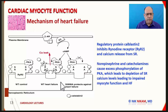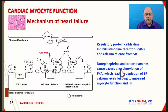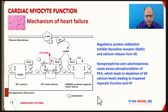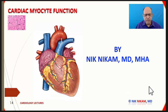There are regulatory proteins called calstabin 2 which inhibit ryanodine receptor 2, thus inhibiting calcium release from the sarcoplasmic reticulum. In patients with heart failure, excess epinephrine and catecholamines lead to excess phosphorylation of protein kinase, causing depletion of sarcoplasmic calcium levels. When there is reduced sarcoplasmic calcium, less calcium is released into the myocyte, which leads to impaired myocardial cell function and heart failure.